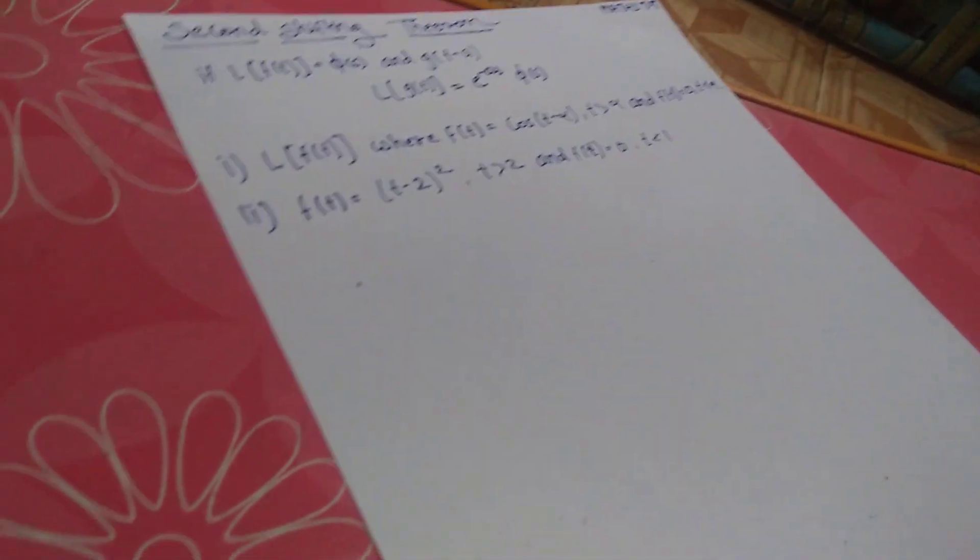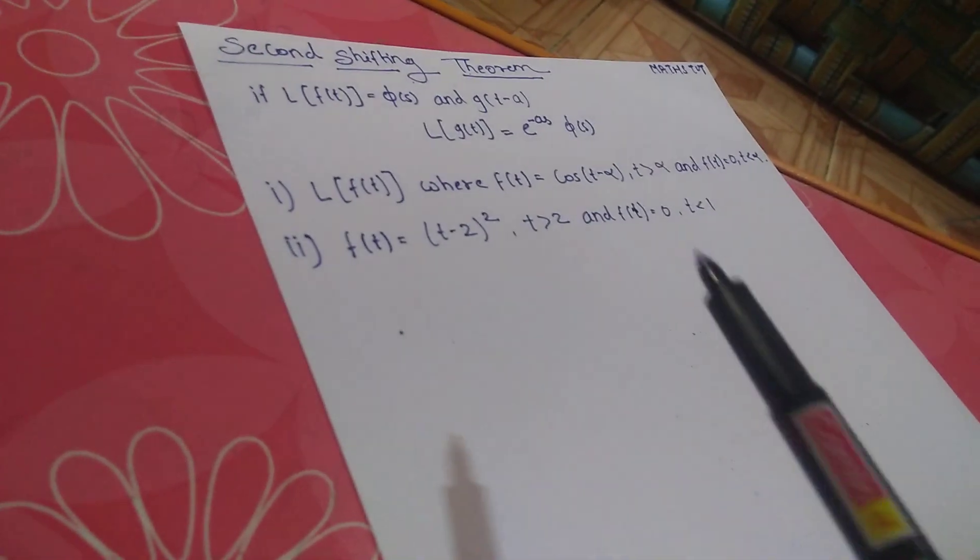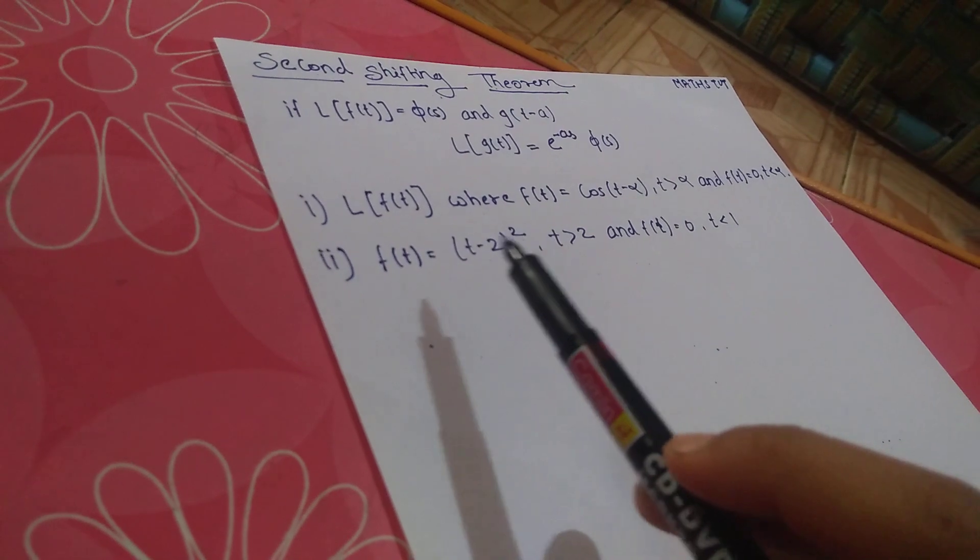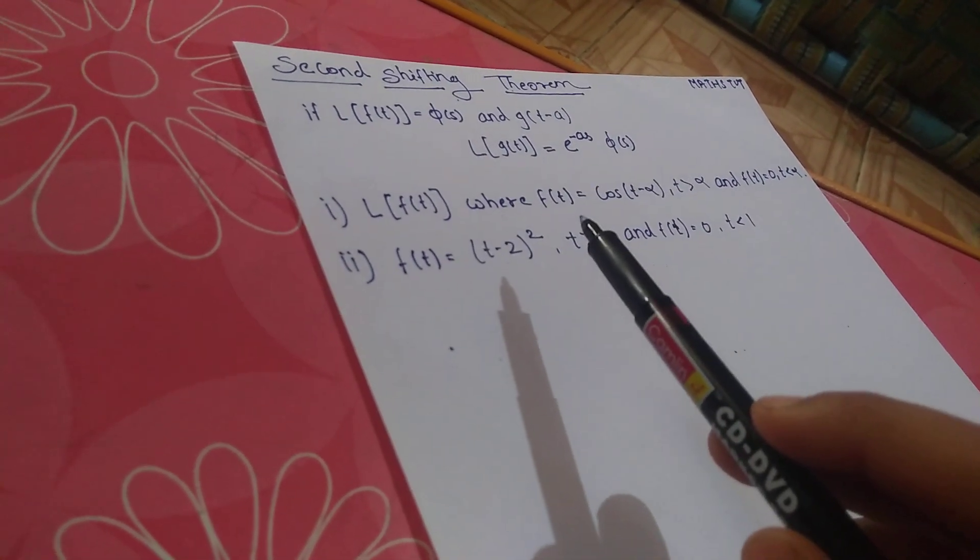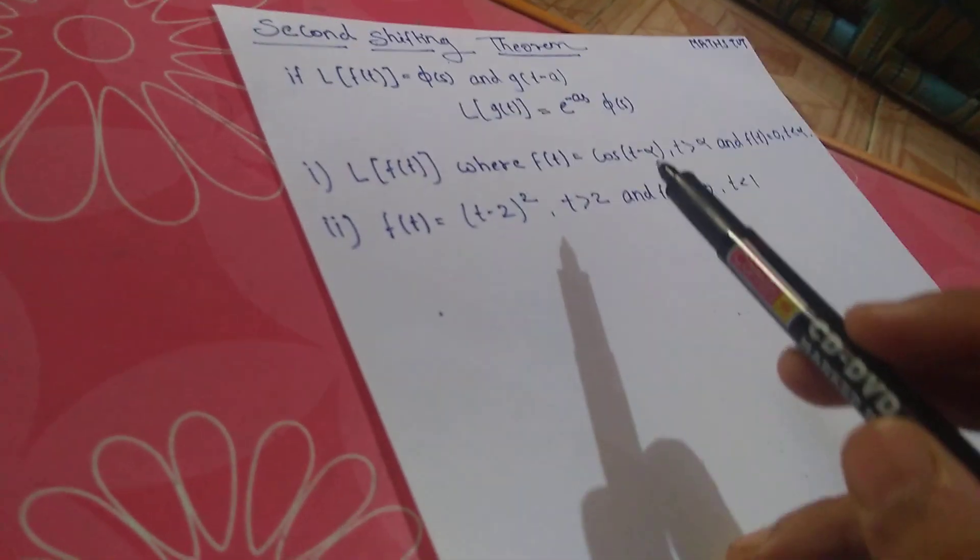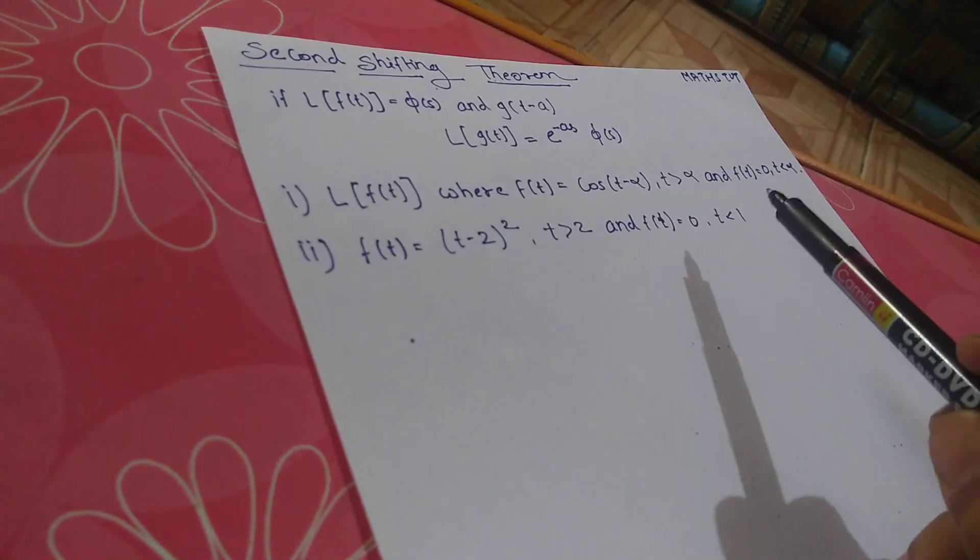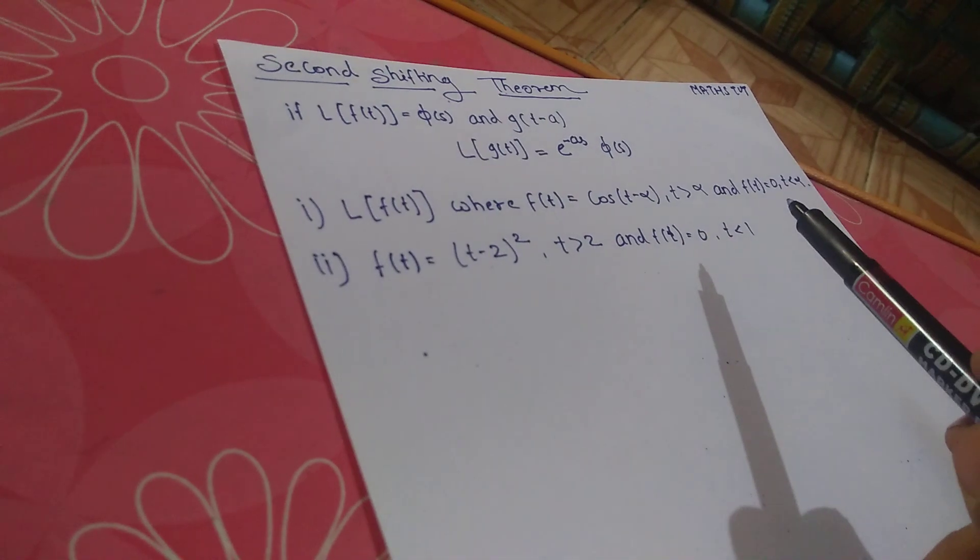My first problem is: if Laplace of f(t), where f(t) equals cos(t-alpha) when t is greater than alpha, and f(t) equals 0 when t is less than alpha.